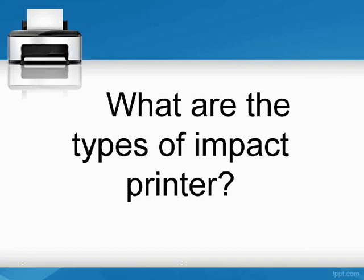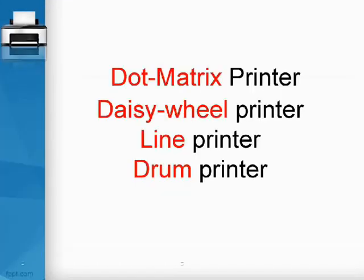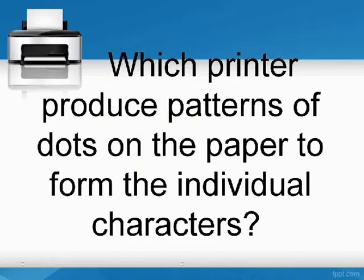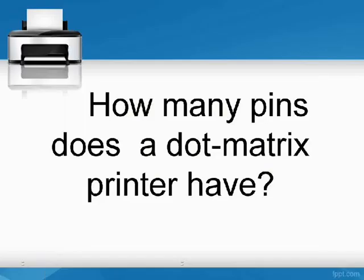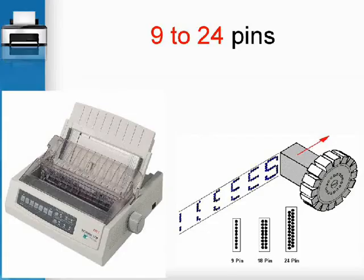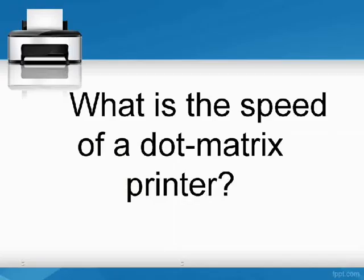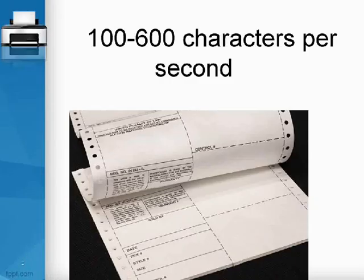The types of impact printers are: dot matrix printer, daisy wheel printer, line printer, and drum printer. Dot matrix printers produce patterns of dots on the paper to form individual characters. A dot matrix printer has 9 to 24 pins, and its speed is 100 to 600 characters per second.